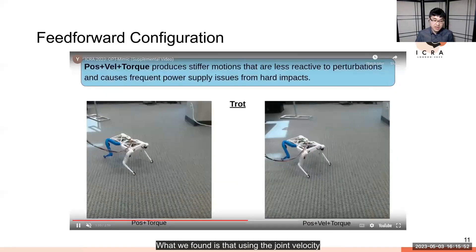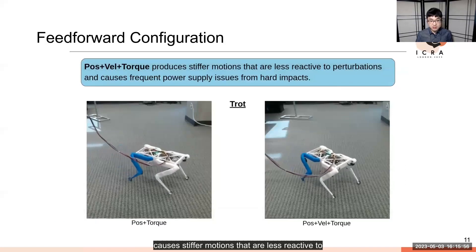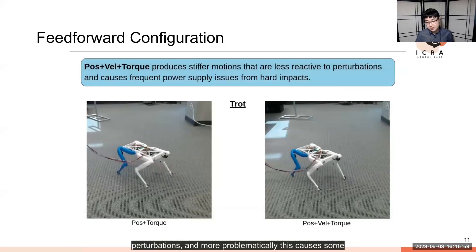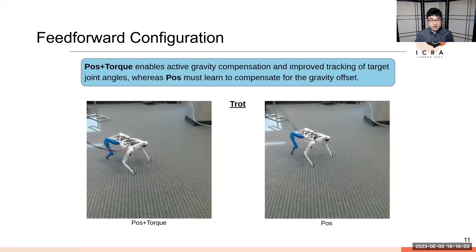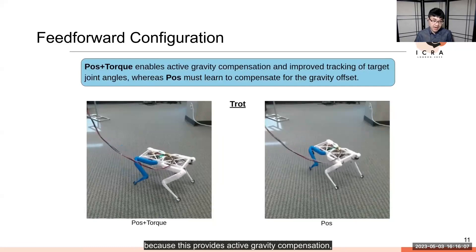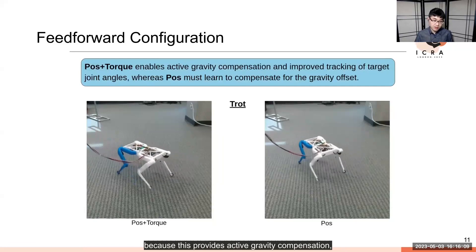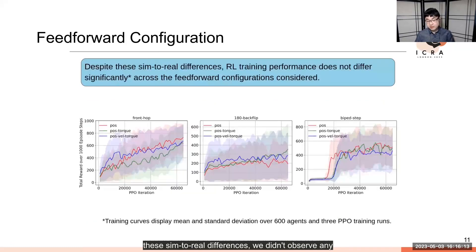What we found is that using joint velocity causes stiffer motions that are less reactive to perturbations, and more problematically, causes power supply issues whenever there are hard impacts. However, using torque we found to be advantageous because it provides active gravity compensation whenever a foot is touching the ground. Despite these sim-to-real differences, we didn't observe any noticeable differences in training speed, as evident in these training curves.